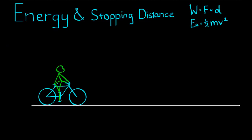A bike rider with bike with initial velocity of 40 km per hour and combined mass, so the bike and the person, of 90 kg.